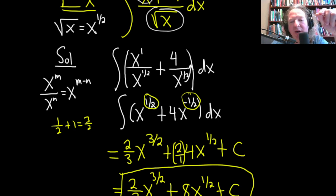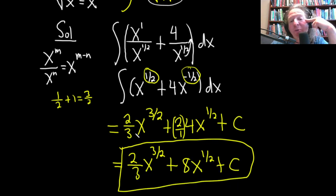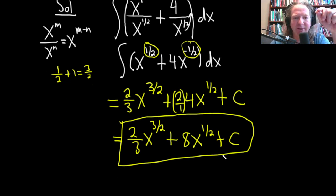We just basically add 1 to each of the exponents. 1 half plus 1 is really 1 half plus 2 halves, which is 3 halves. Then you're supposed to divide by 3 halves, but instead of dividing by 3 halves, we chose to multiply by the reciprocal, which is 2 thirds. Same thing here. We're supposed to divide by 1 half. Instead, we multiplied by the reciprocal, which is 2 over 1. And then just cleaned it up. 2 times 4 is 8, and all is good.